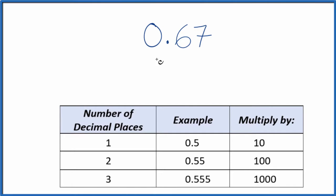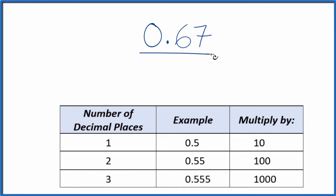Let's convert the decimal 0.67 to a fraction. First, let's put 0.67 over 1. We're dividing by 1, so we haven't changed the value, but now we have the start of a fraction.